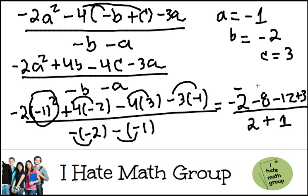Negative 2 minus 8 is negative 10. Negative 10 minus 12 is negative 22, and negative 22 plus 3 is negative 19. The bottom is going to be just 2 plus 1.